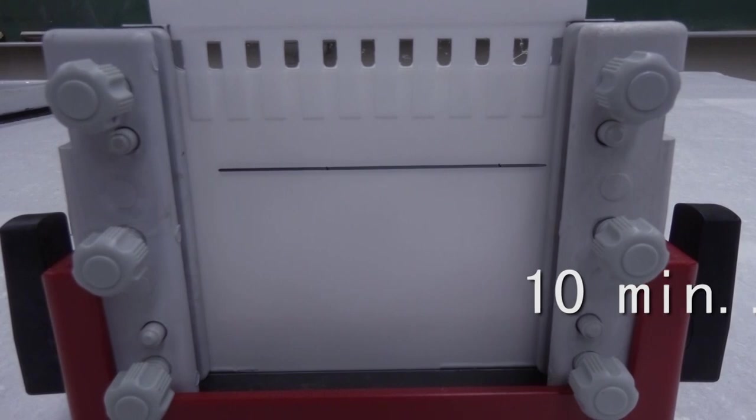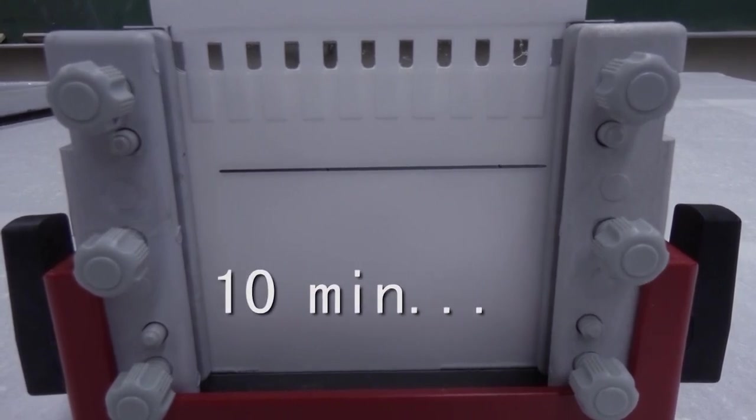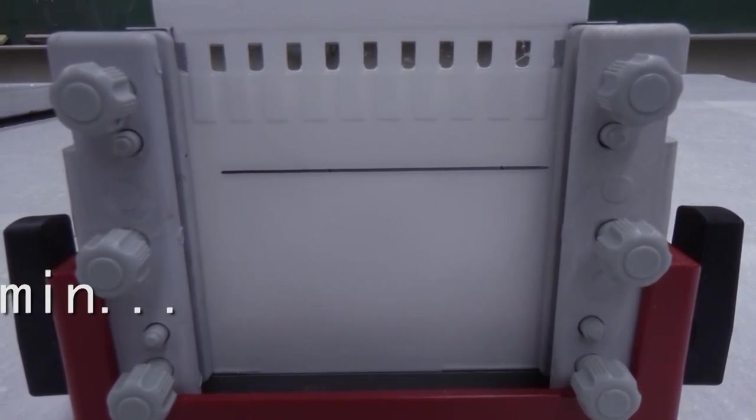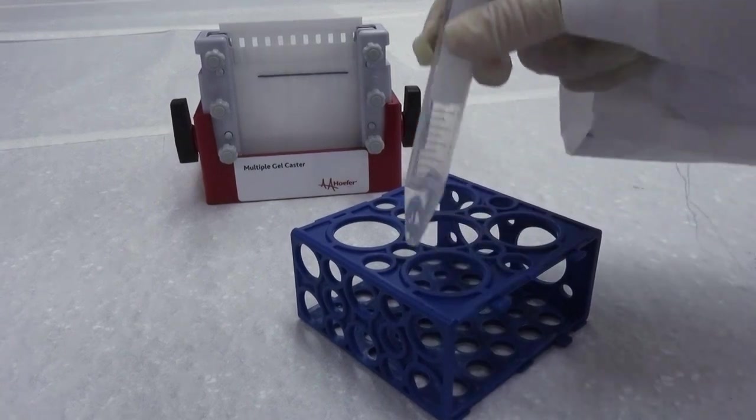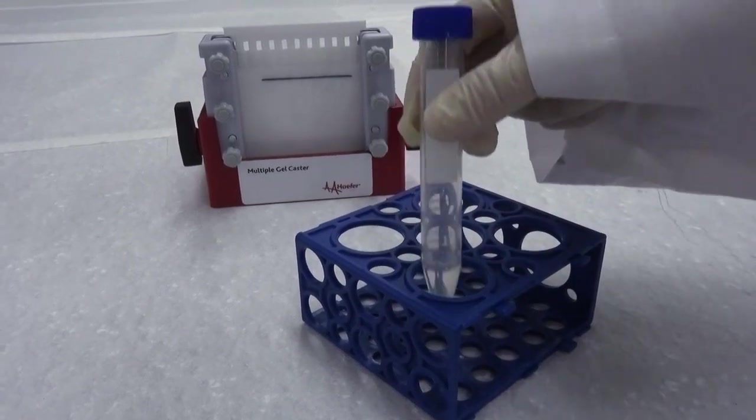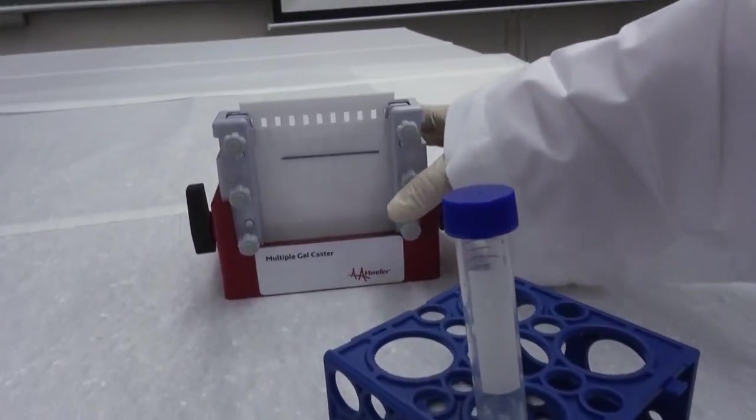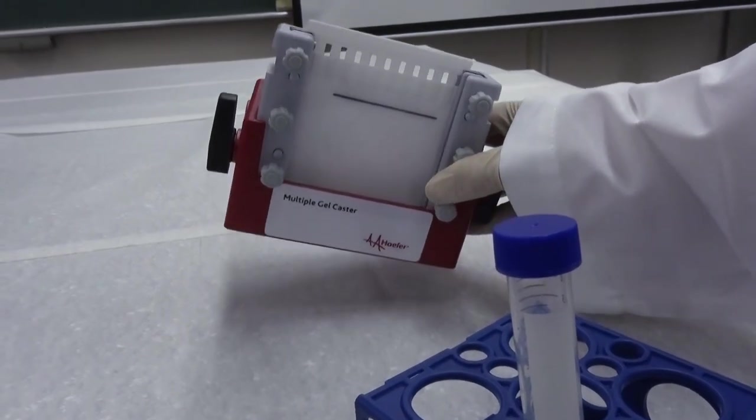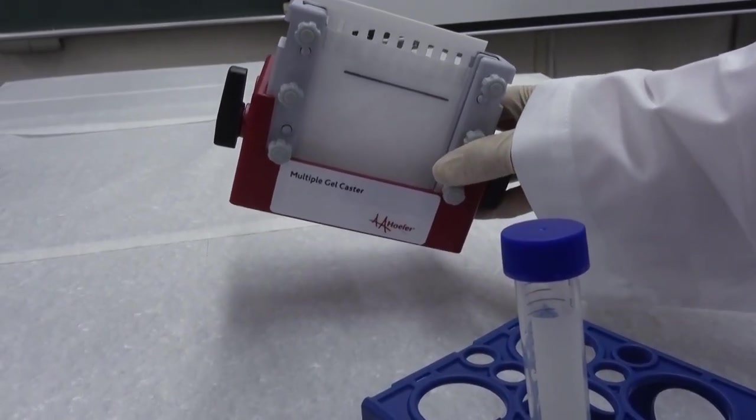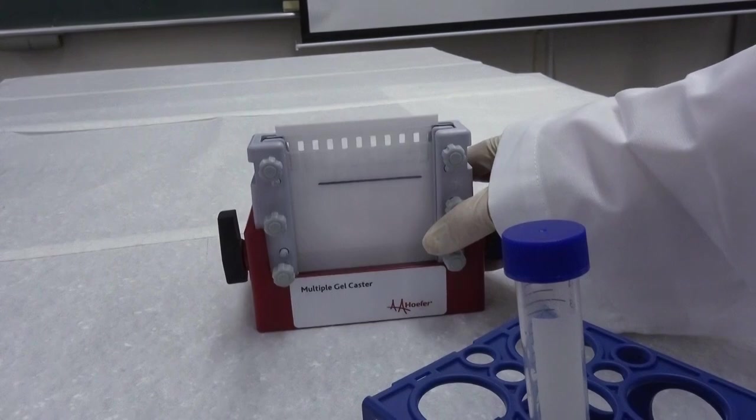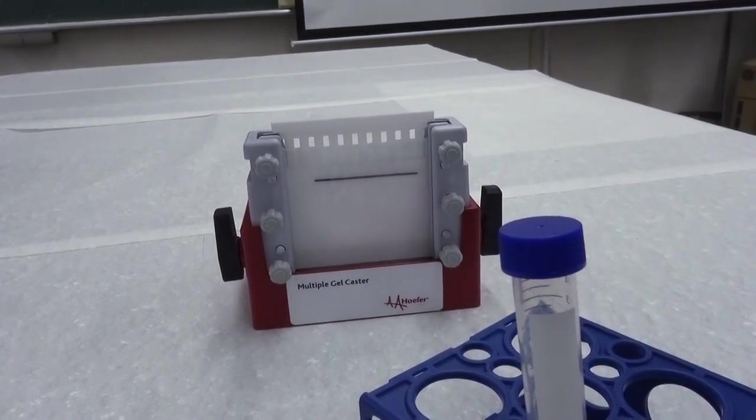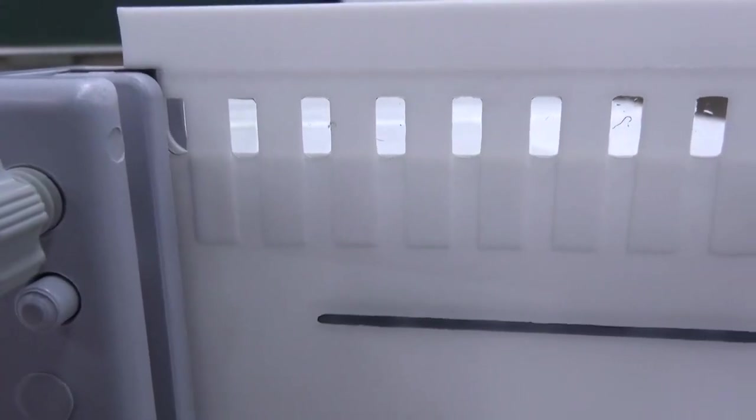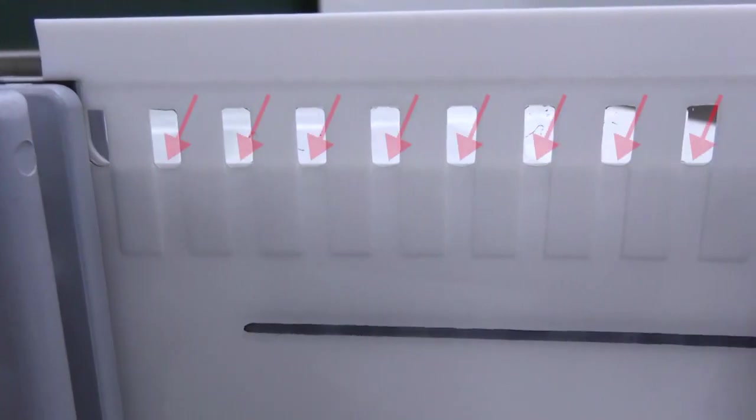Wait at least 10 minutes for the gel to polymerize. Low temperature requires longer time. When the time is up, observe the surplus gel solution. If it has polymerized, the gel in the cassette should also have polymerized. Slightly tilt the gel rack to check whether a gel surface has formed. If there is a gel surface with intact sample wells, you have made the upper layer gel successfully too.